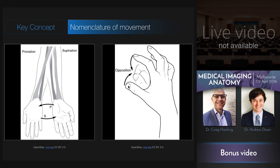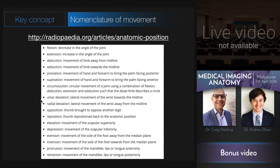The thumb is a very specialised digit on the upper limb — one of the things that defines apes and great apes — so it has special movements. The first is opposition, where the thumb is brought across the palm to approach a digit, usually the fifth digit, if it goes all the way across the palm. When the thumb returns to the anatomic position, this is referred to as reposition. Other special movements include ulnar deviation and radial deviation of the wrist, elevation and depression of the scapula defining movement superiorly and inferiorly, as well as protrusion or retraction, where the mandible, lips, or tongue are protruded anteriorly and retracted posteriorly.